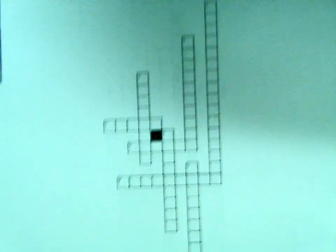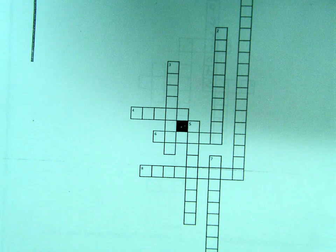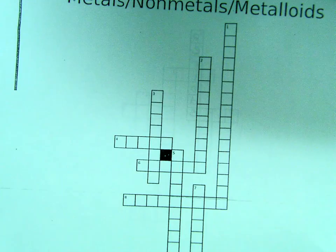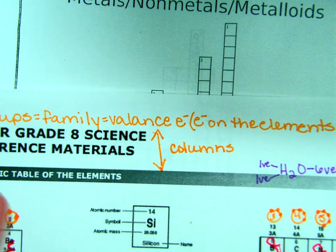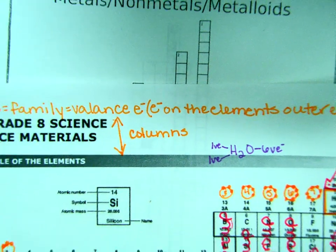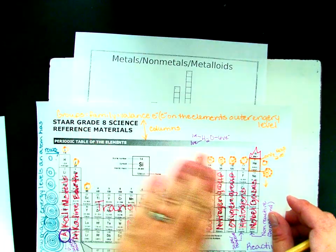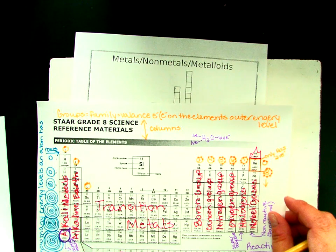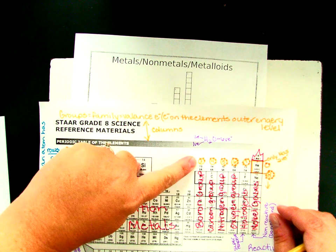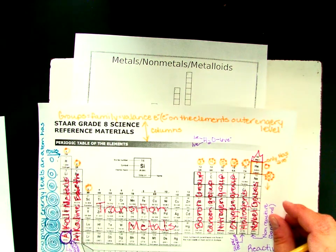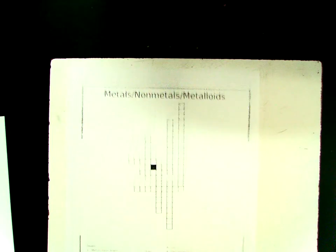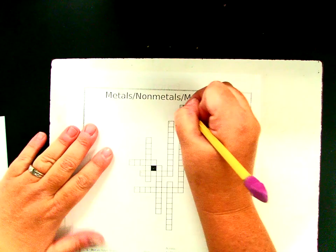It says right here, metals have fewer blank blank than non-metals. So if you're looking at your periodic table, here's our metals, here's our non-metals. Metals, non-metals, and it's looking for a two-part word, and it's going to have to do with these up here. So what did we call these the other day? Think about it. And we call those valence electrons. So we're going to fill in, and this is one down.